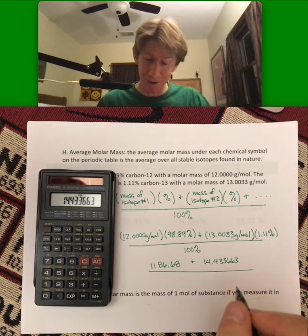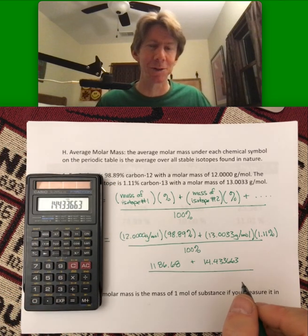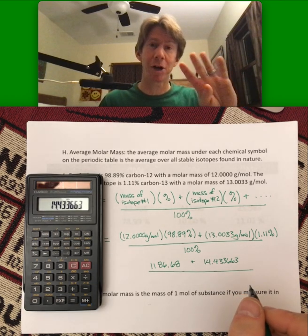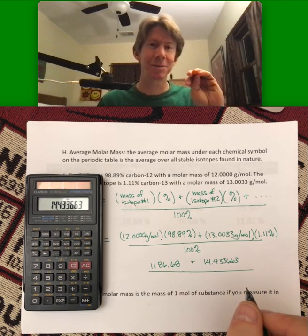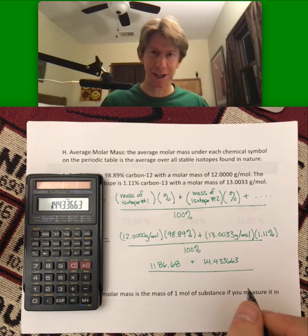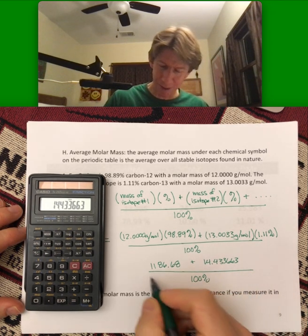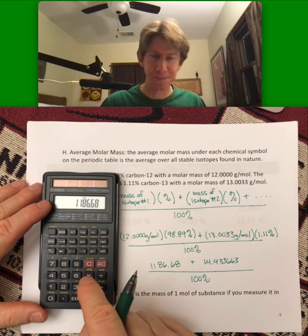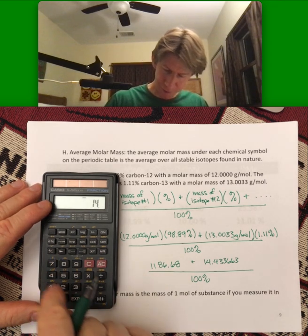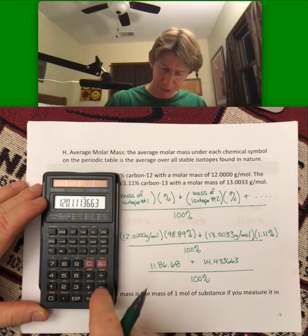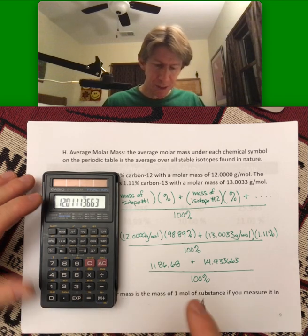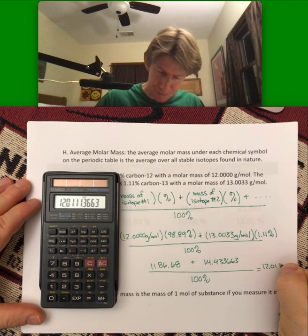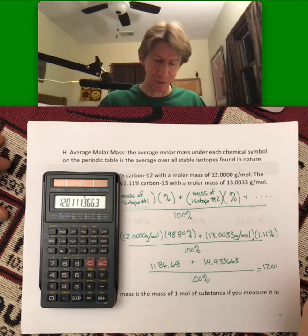For molar mass here, we're actually going to make sure we compare it to the number on the periodic table. The numbers on the periodic table all have four sig figs, so we are going to keep four sig figs, but this is a special case. Normally, three sig figs is always fine for lecture. Let's see how it works out. So 1186.68 plus 14.433663 divided by 100 equals 12.011.